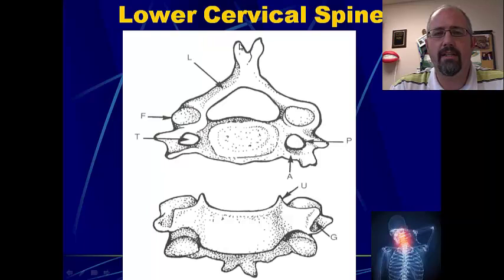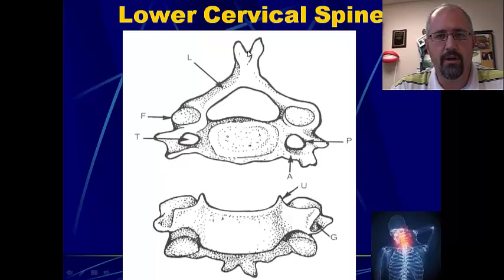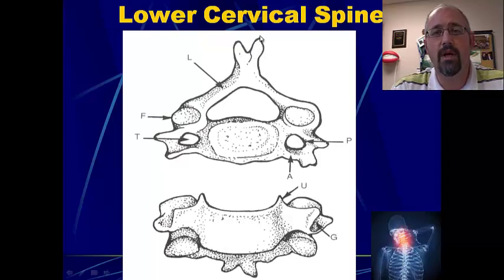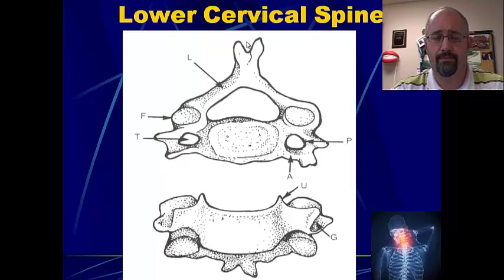What happens a lot of times with these bifid tips is that a therapist will come in and palpate one of them and think that that is the whole spinous process. If this were the whole spinous process, they would think that the vertebrae has actually been rotated. But the vertebrae hasn't been rotated — they just need to drop their fingers over to the other side to feel the whole spinous process. So that can sometimes be a little confusing when doing palpations going down through the joints of the neck.